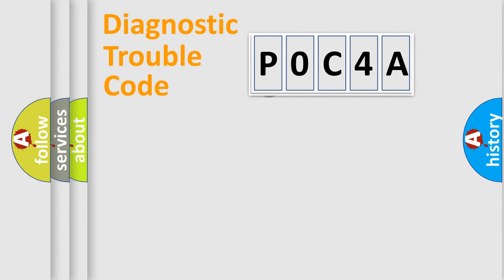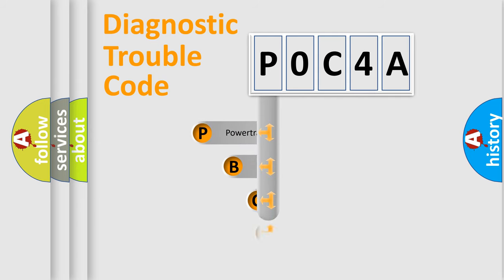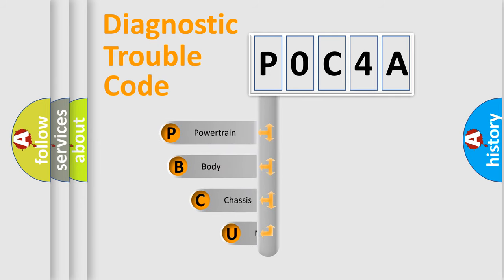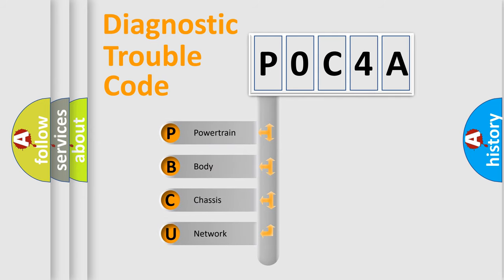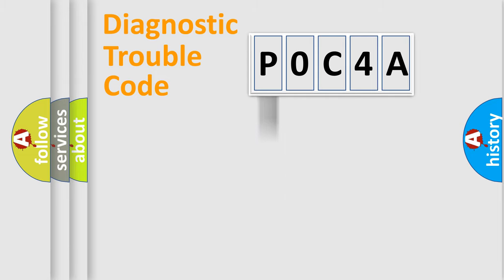First, let's look at the history of diagnostic fault code composition according to the OBD2 protocol, which is unified for all automakers since 2000. We divide the electric system of an automobile into four basic units: powertrain, body, chassis, and network. This distribution is defined in the first character of the code.